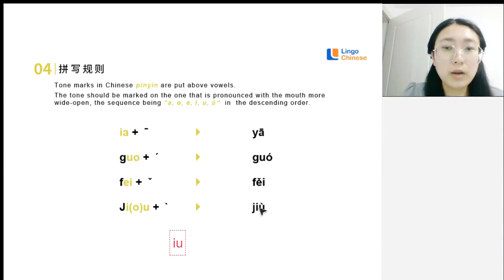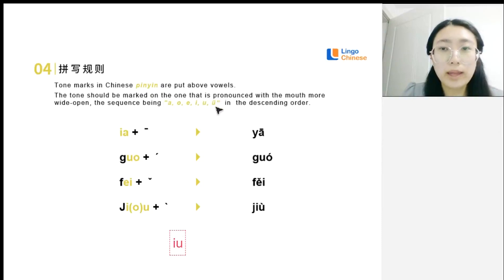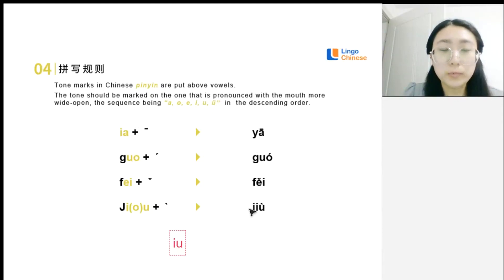In conclusion, to write pinyin correctly, you just need to remember that the tone mark follows the sequence a, o, e, i, u, ü. The only exception is 'ui' — we put the tone mark on the 'i'.